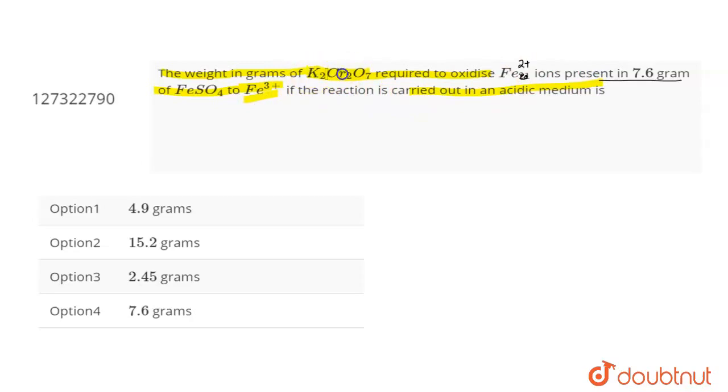Basically, you can tell how much of K2Cr2O7 should be to oxidize Fe2 positive ions into Fe3 positive ions when you have FeSO4 weight and the reaction in the acidic media. Let's see. This question will be done.